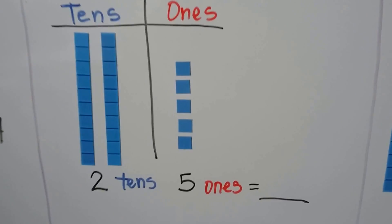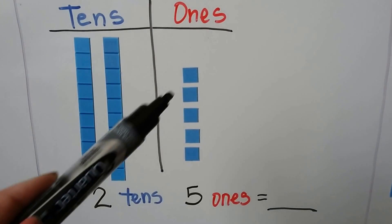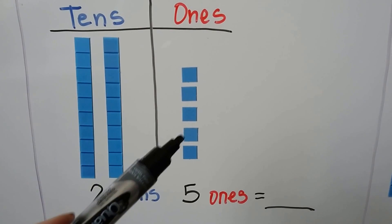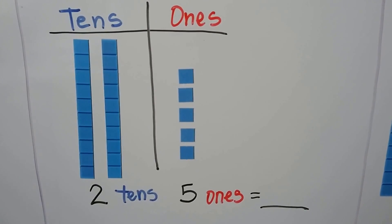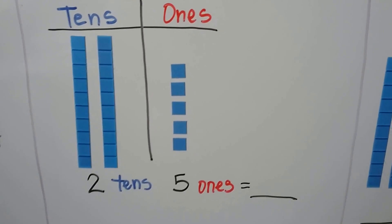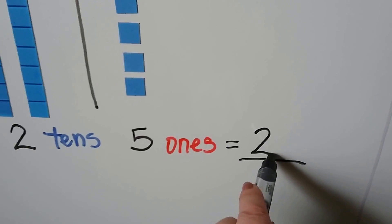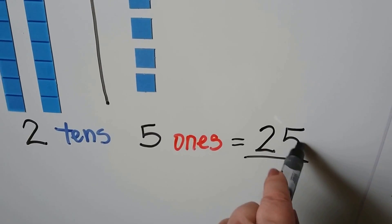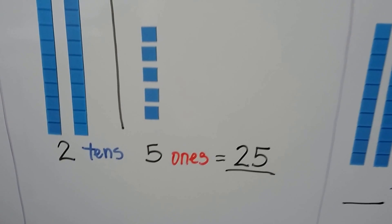Here we have two tens and one, two, three, four, five ones. We can write the number. We have two in the tens place and five in the ones place. We have 25.